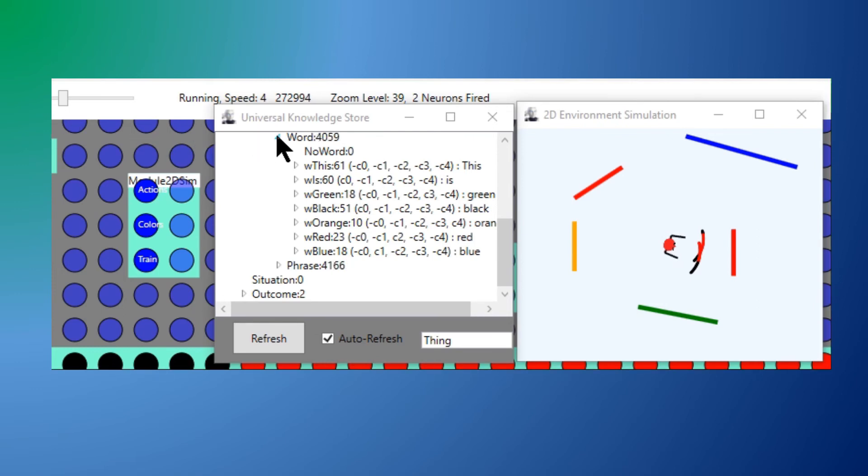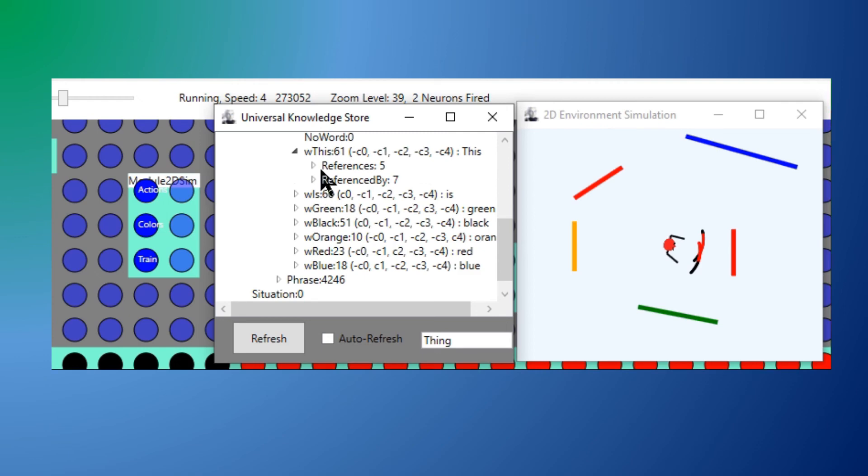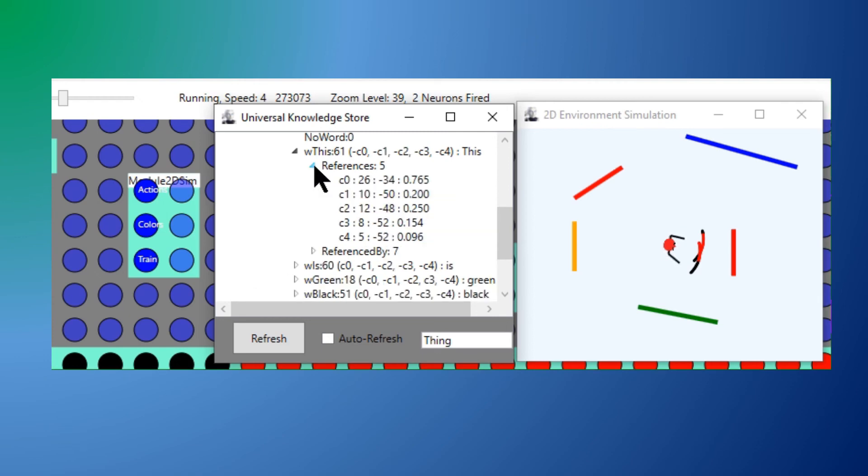The word 'this' is not associated with any color. We can look more deeply at the links from the word by expanding the references list, and this shows each of the reference links followed by the raw counts of hits and misses, followed by the calculated ratio of hits to misses. We can see that for each color, the ratio is less than one, meaning that for the word 'this' there are more misses than hits for every color.